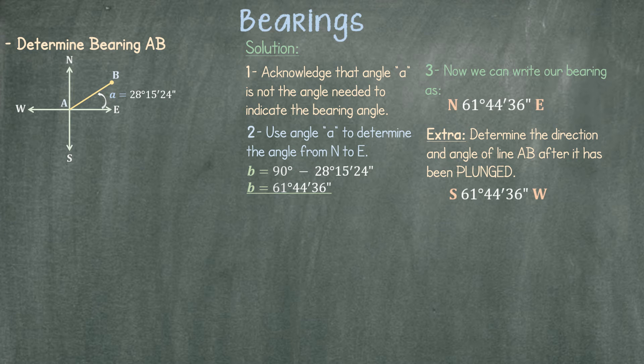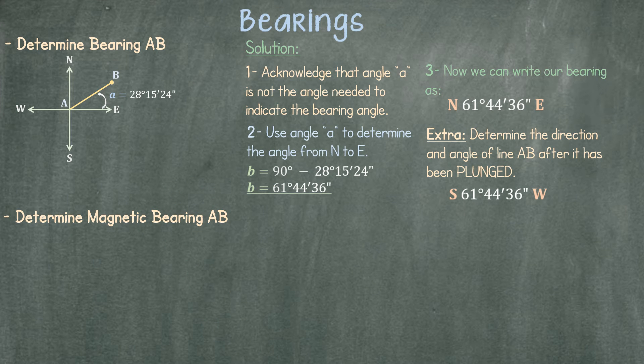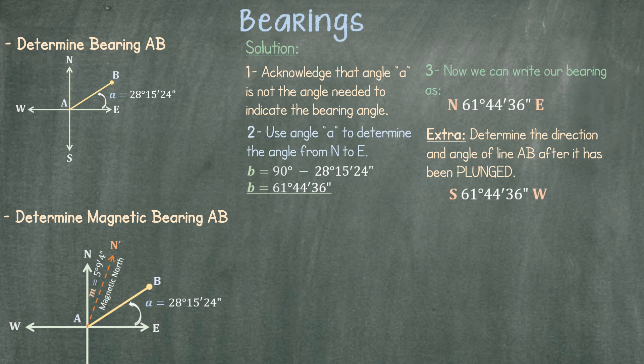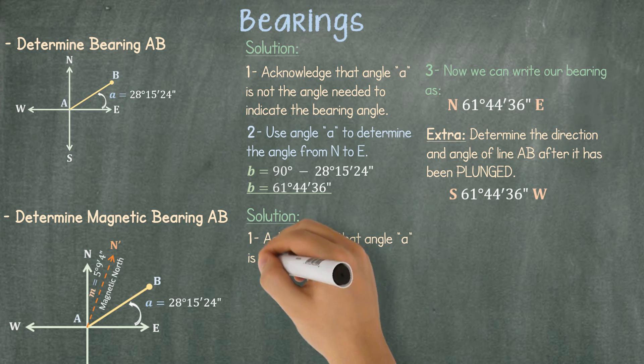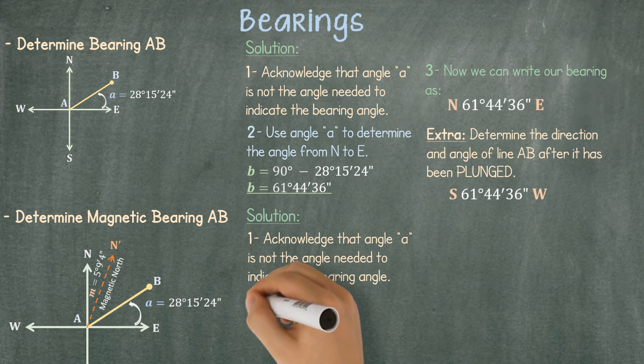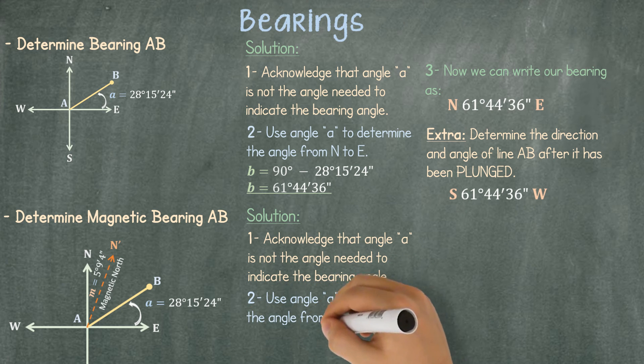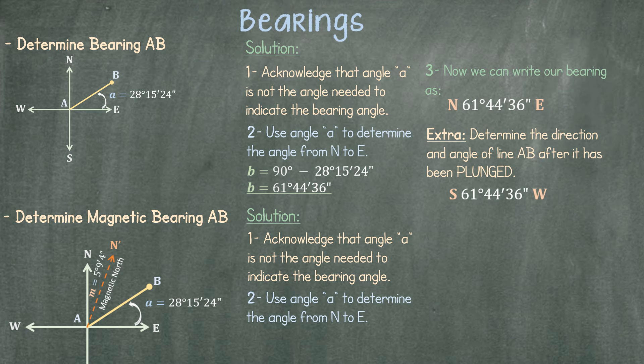Our second example is to determine the magnetic bearing AB. We are given the following information. Similar to our previous example, we acknowledge that the angle A is not the angle needed to indicate the bearing angle. We instead use angle A to determine the angle from north to east just like before.